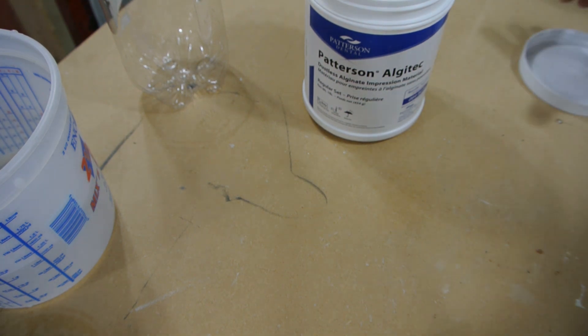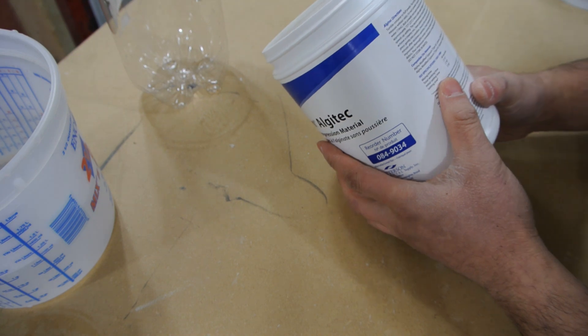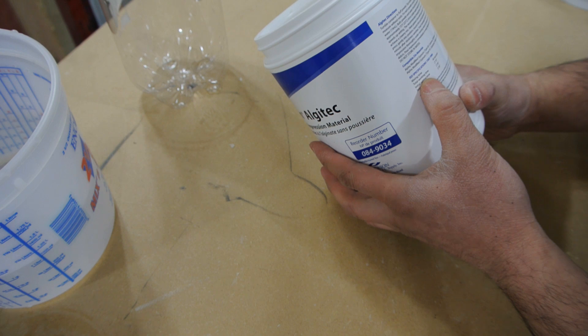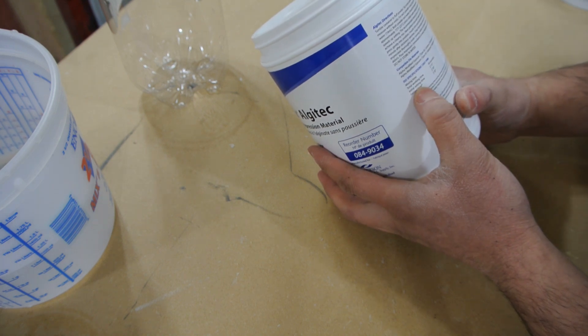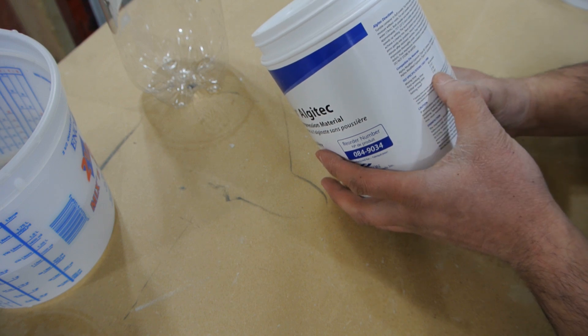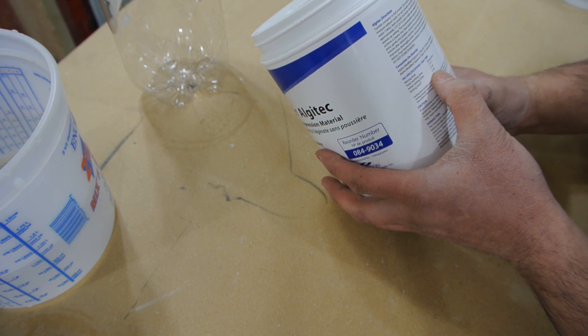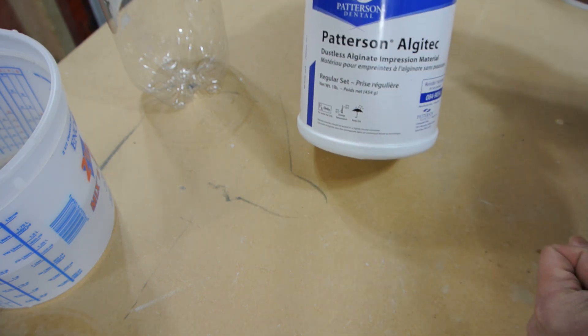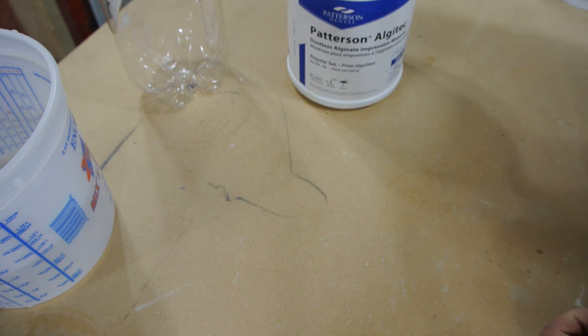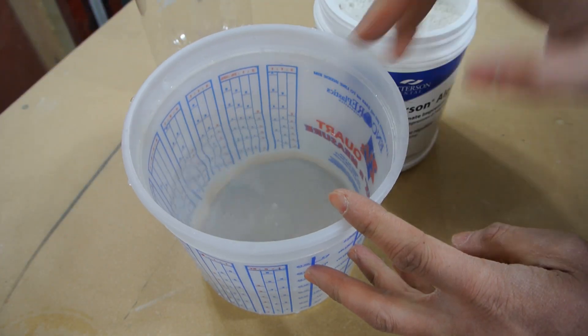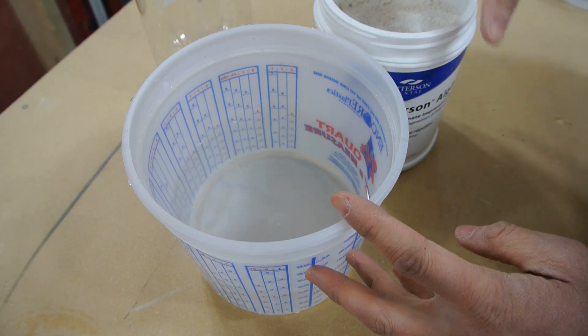The directions on this say that mixing time I have 60 seconds, so with that power mixer I shouldn't have any problems. Total working time is 2 minutes and 15 seconds. Initial set time is 2 minutes and 30 seconds, and setting time combined everything together is 3 minutes and 30 seconds. That's probably about the time when you can remove your hand from the mold.